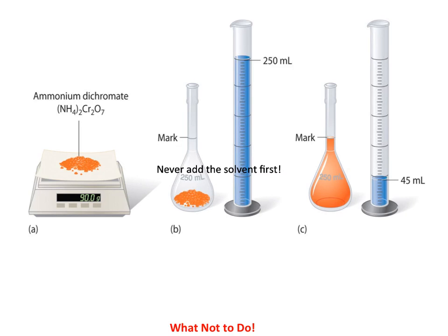In this example, we're using 90 grams of solute and we want the volume of the solution to be 250 milliliters. In the center illustration, you can see the individual making the solution is mistaken — they're using exactly 250 milliliters of solvent and adding that to the 90 grams in the volumetric flask. As shown in figure C, when they add the 250 milliliters of water to the flask, the volume of the solution is actually 45 milliliters above what it should be, making the solution more dilute than intended. The solute takes up some space, so the volume of the solution will never be exactly the same as the volume of the solvent.